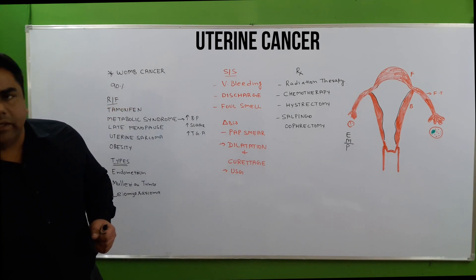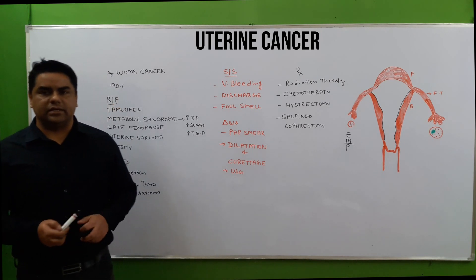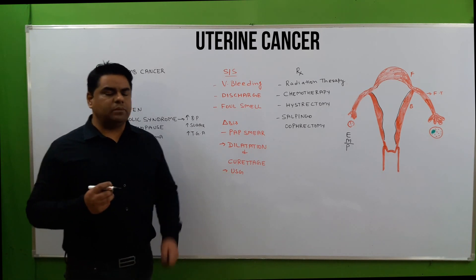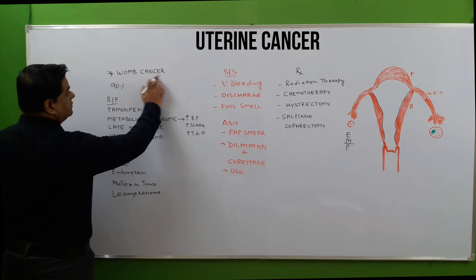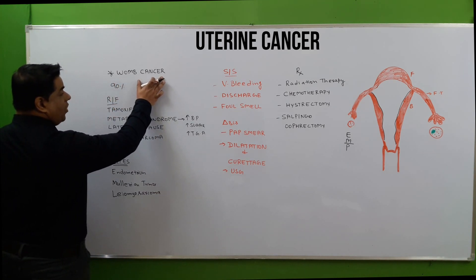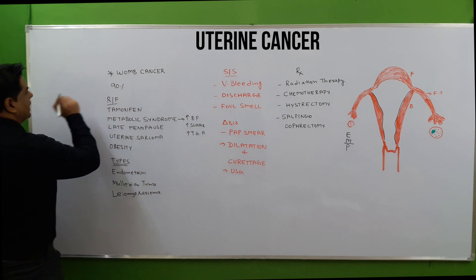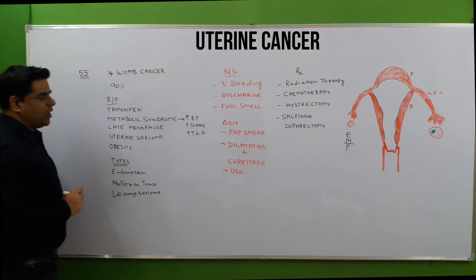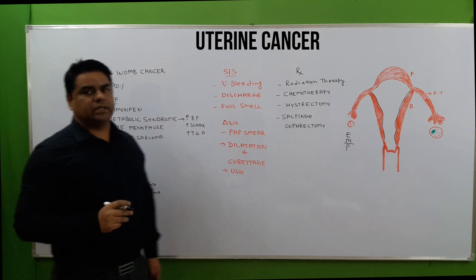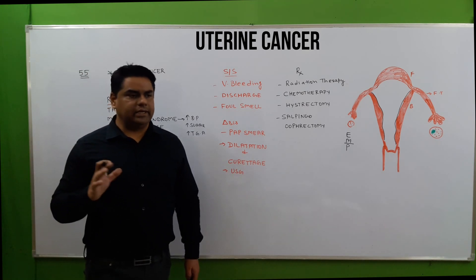Endometrial cancer is also known as uterine cancer or womb cancer. It is commonly present after the age of 55 years, especially after menopause, and is generally found in the older age group.